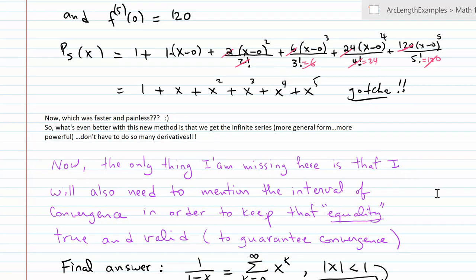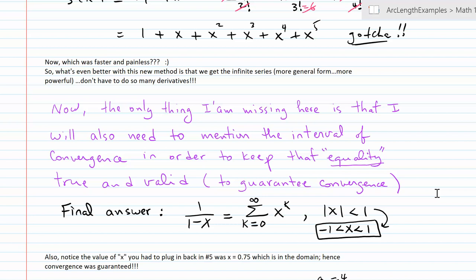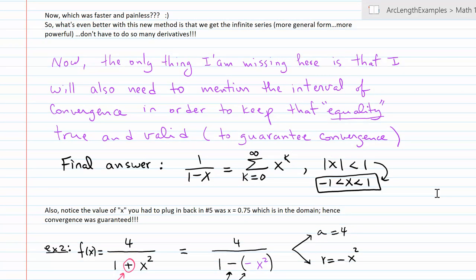So now the only thing that I'm missing here is that I need to mention what the interval of convergence is for this particular power series. Remember that without the interval of convergence, without the domain, this equality does not mean anything. These are true - these are equal to each other - provided there's a condition attached to it, provided that the value of x that you choose to approximate is a number that's between 1 and negative 1. And if you recall in the homework, number five from the previous section, you were supposed to plug in 0.75. You can see 0.75 actually is in this interval. That's the reason why your answer converged to the actual value - it was kind of pretty close to it, but it was going to converge as we added more terms.